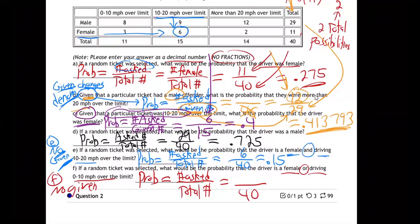Female or — or means we need to add them up. Remember that? We learned some of that last time. We're going to have to add up a few categories here. So let's go find the people that are female or driving zero to 10 over the limit. All these people are females — three, six, two. We're going to have to add those up.